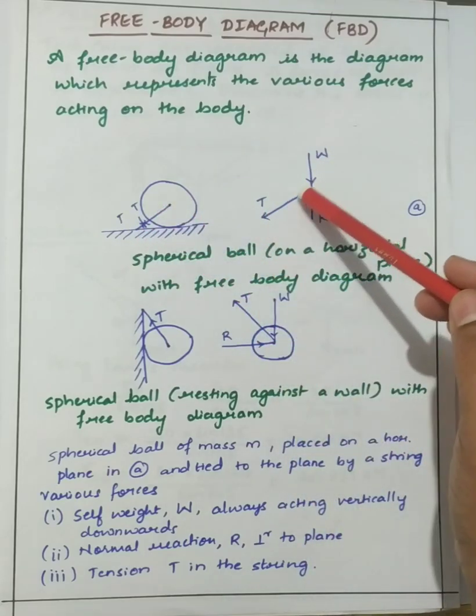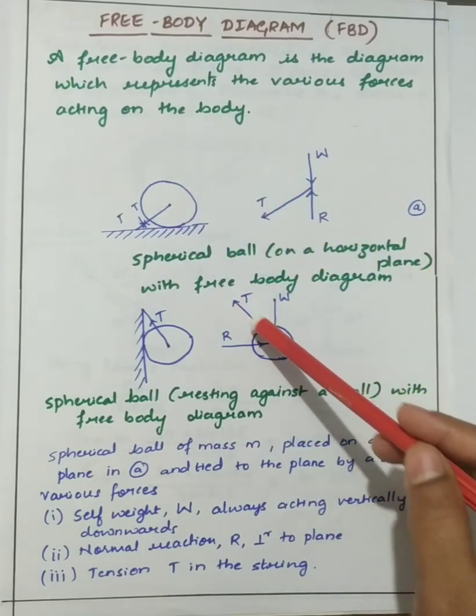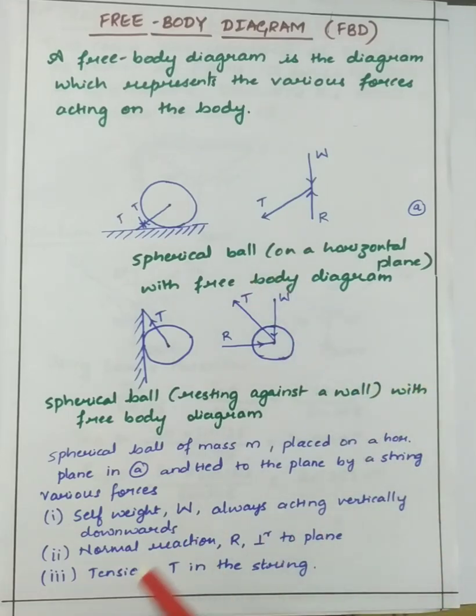So these are the various forces. Drawing free body diagram means a single spherical ball or any object will be given and what we have to do is draw the diagram showing all the forces including the self weight of the body and the normal reaction and tension. That is free body diagram.